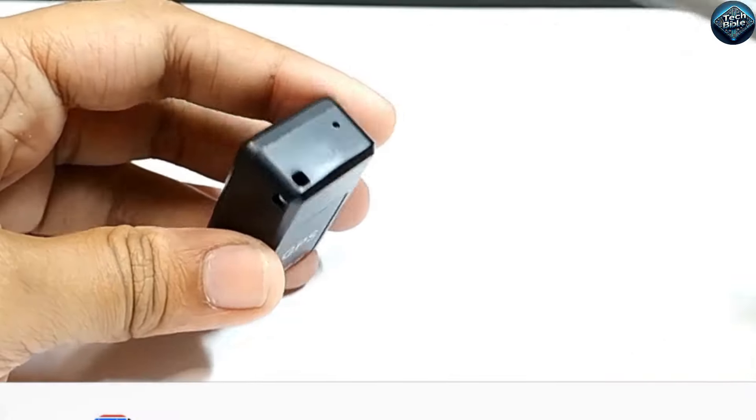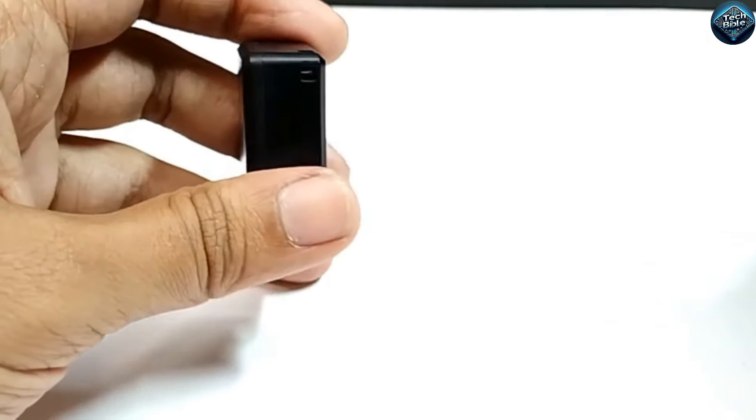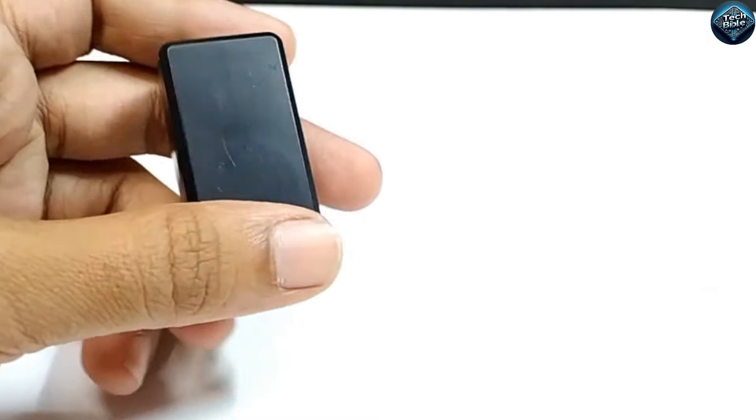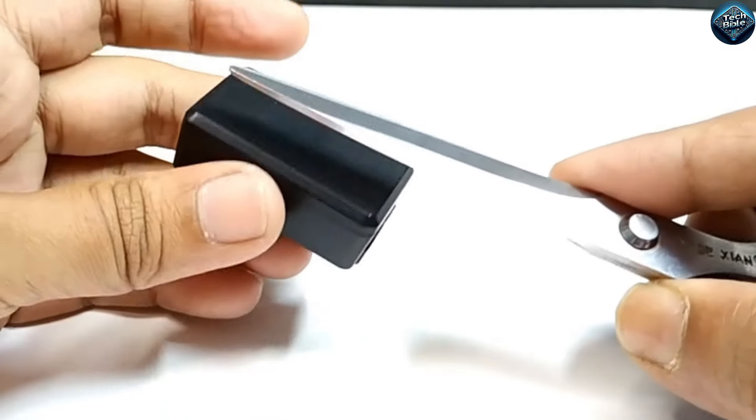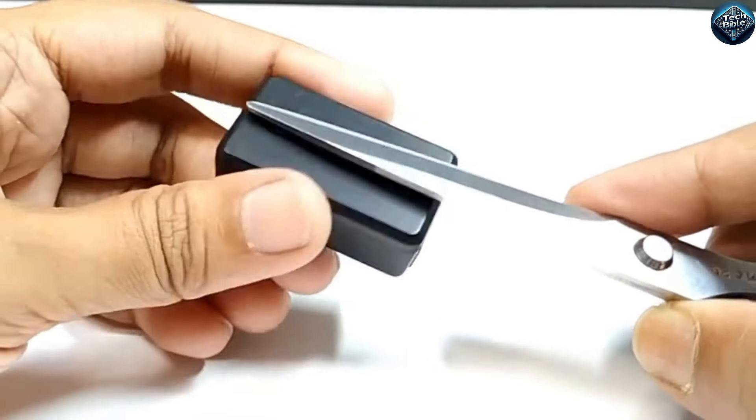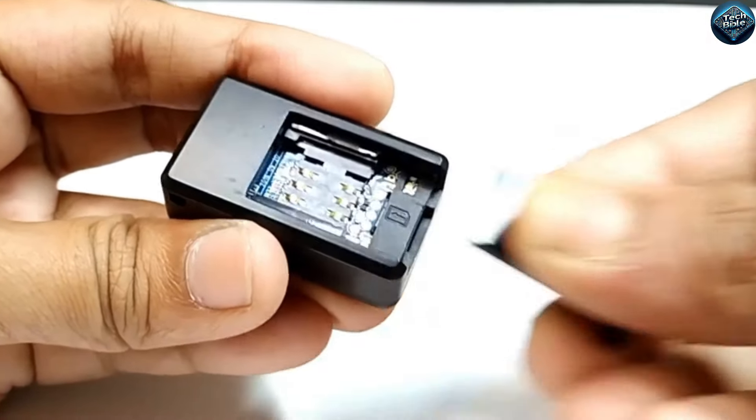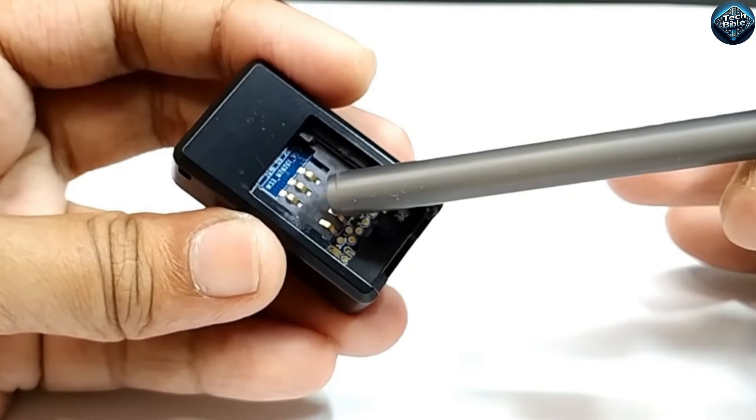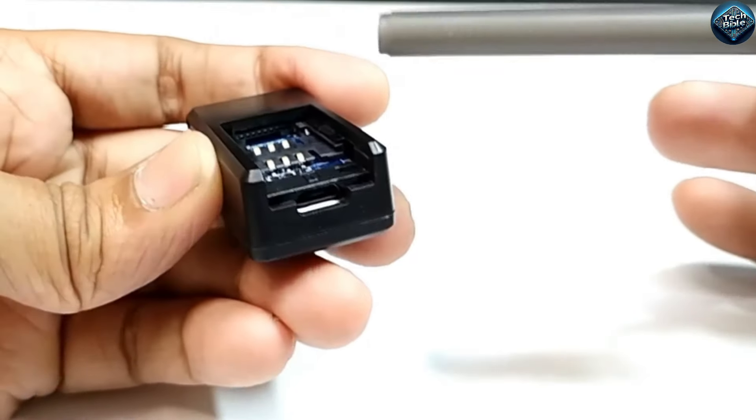The Magnetic GF07 Mini GPS Tracker, despite its advanced features, has been banned in several regions due to privacy concerns and misuse. This compact device, known for its powerful magnet and discrete design, allows users to track the location of vehicles or personal belongings with impressive accuracy.